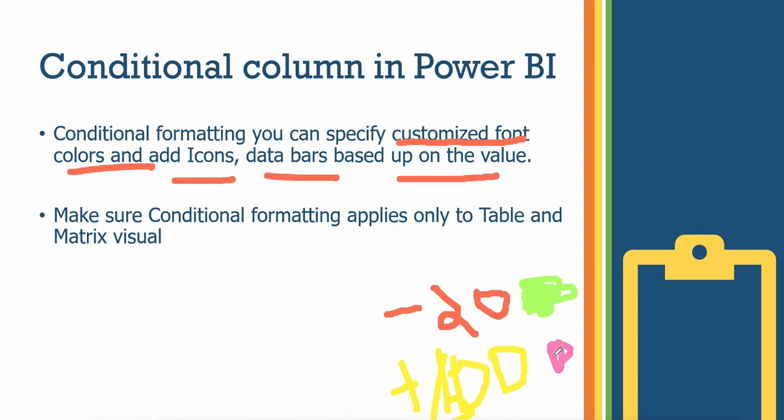You can specify customized font colors — for negative values you can include red color, and for positive values you can include blue. Similar to this scenario, you can also set red circle icons for negative values and green color icons for positive values.